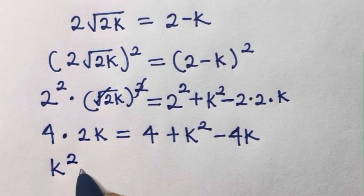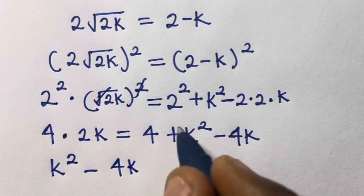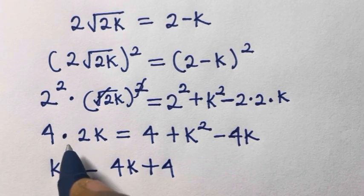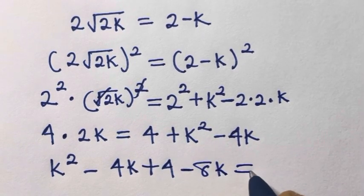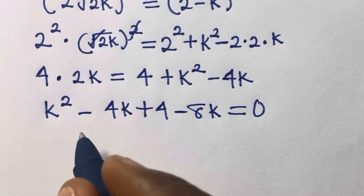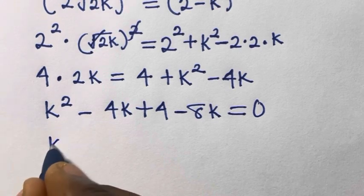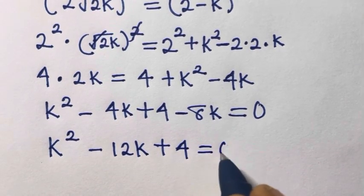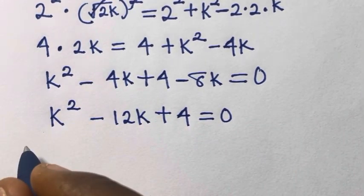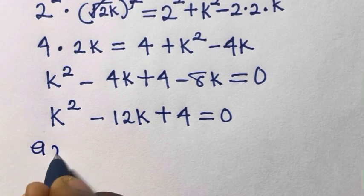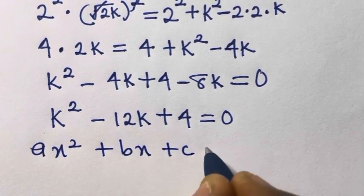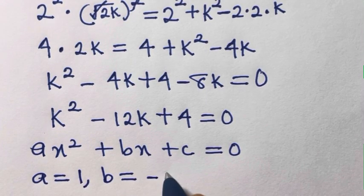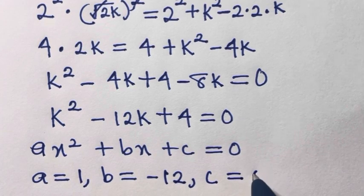Rearranging, we have k squared minus 4k plus 4 minus 8k equals zero, so k squared minus 12k plus 4 equals zero. This is a quadratic equation. Comparing with the general form ax² + bx + c = 0, we have: a equals 1 (coefficient of k squared), b equals negative 12 (coefficient of k), and c equals 4 (constant).